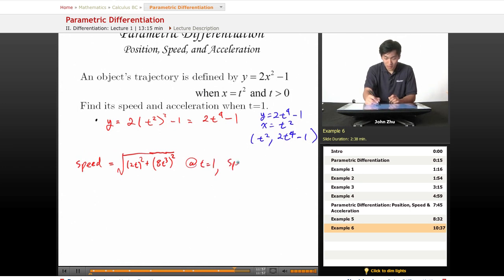speed will equal the square root of 2 squared, plus 8 squared, which equals the square root of 68.